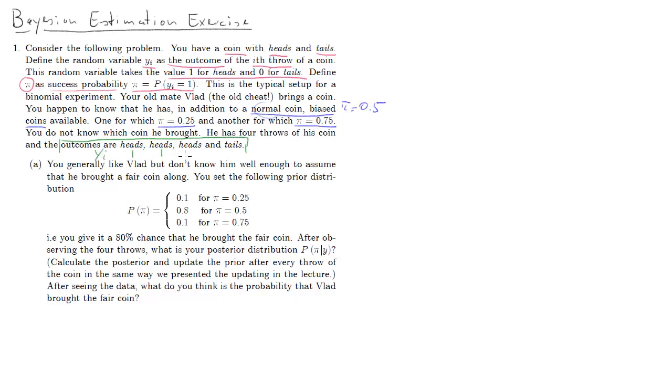That's what we see. So yi takes the values 1, 1, 1, and then 0. So when we do this with Bayesian estimation, we need a prior distribution. And that's this one.